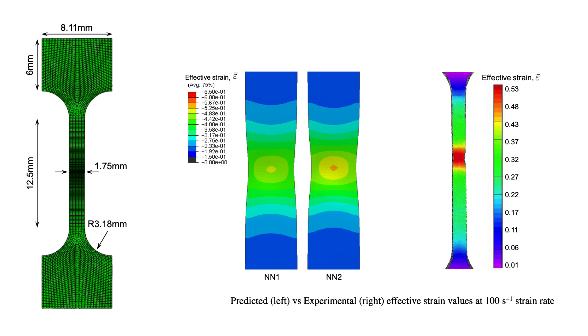What I did next was to use this NN1 and NN2 as the hardening properties for my Abaqus simulation. So I used Abaqus VUMAT to be able to give the material the properties, the mechanical properties, based on these neural networks.